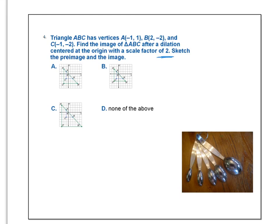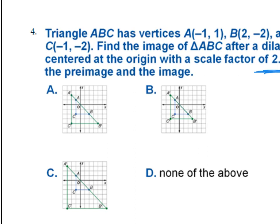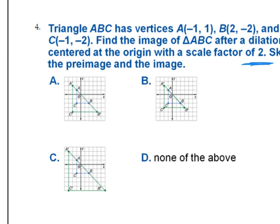Last question. Triangle ABC has these vertices. Find the image of ABC after dilation centered at the origin with a scale factor of 2. So you might have to enlarge this a little bit to actually see, but remember you're trying to figure out which of these shows a scale factor of 2. So go ahead and pause the video and take your best guess.